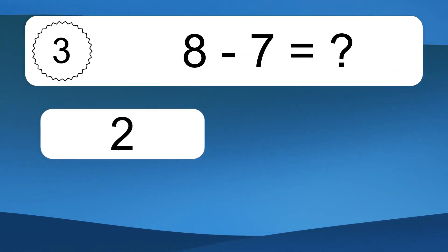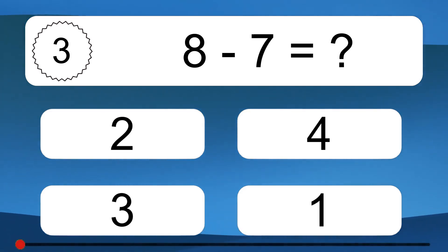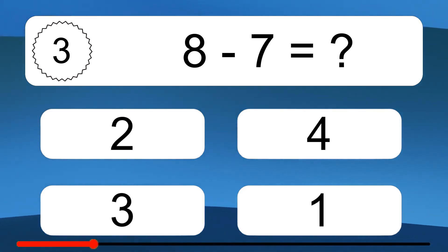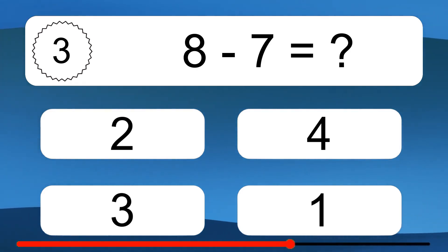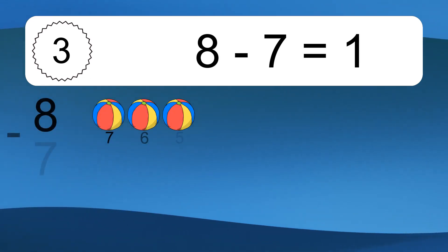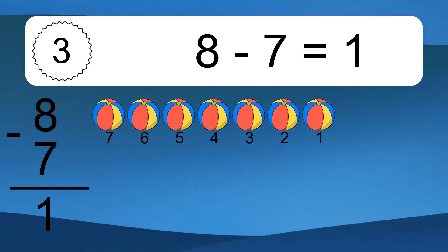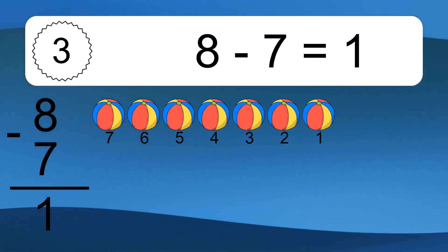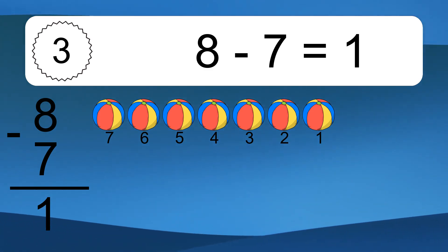8 minus 7 equals what? 8 minus 7 equals 1. Let's count it. 7, 6, 5, 4, 3, 2, 1.